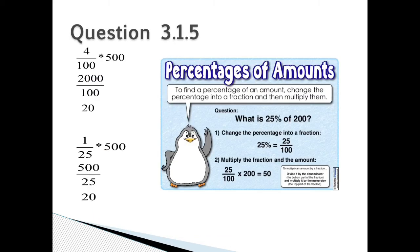Question 3.1.5: 4 over 100 times 500 is equal to 2,000 over 100. If you simplify it further, it is 20. 1 over 25 times 500 is 500 over 25, and if you simplify it further, it is 20. Percentages of amounts: To find a percentage of an amount, change the percent into a fraction and then multiply them. So what is the 25% of 200? 25% is equal to 25 over 100. If you multiply the fraction and the amount, 25 over 100 times 200 will give you 50.